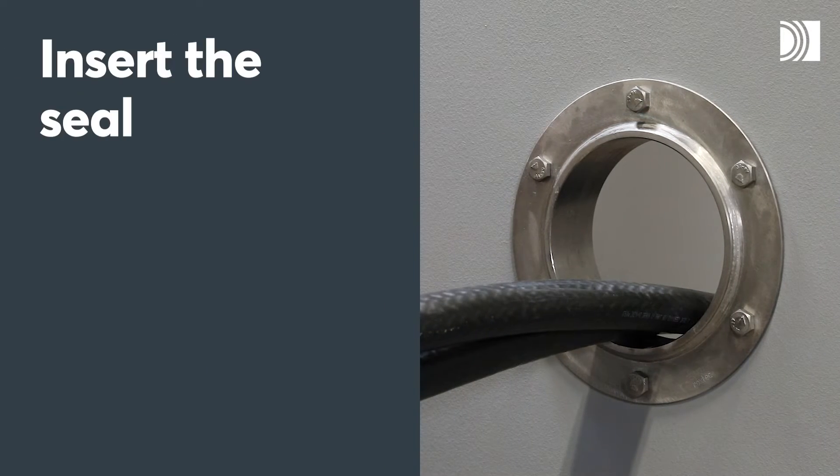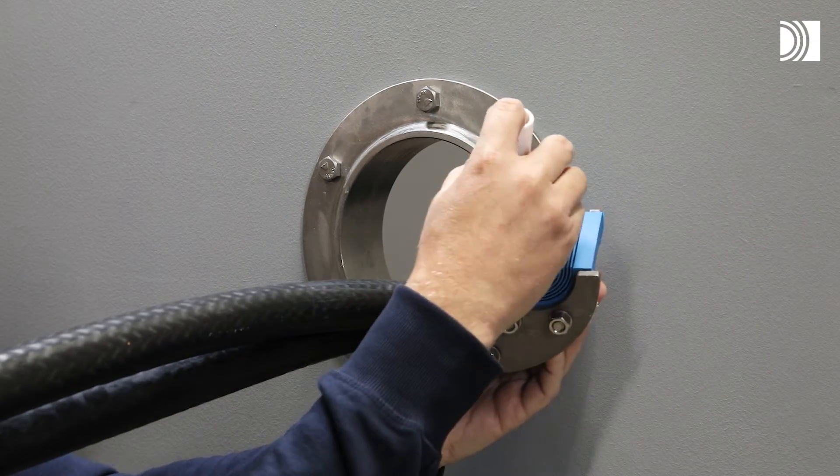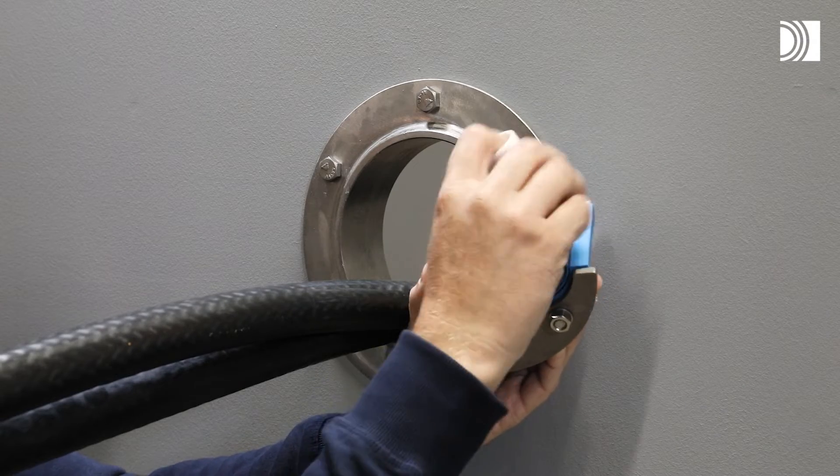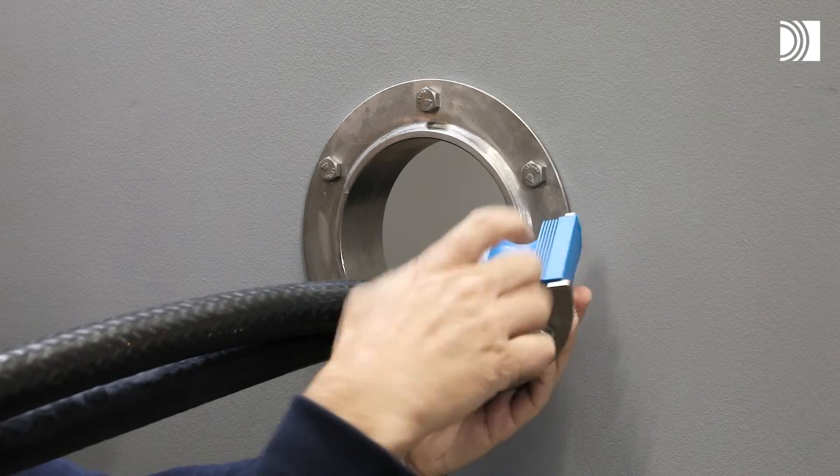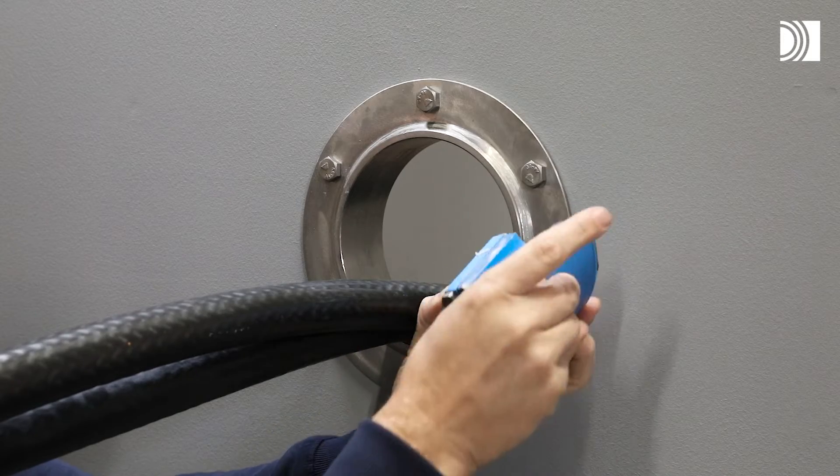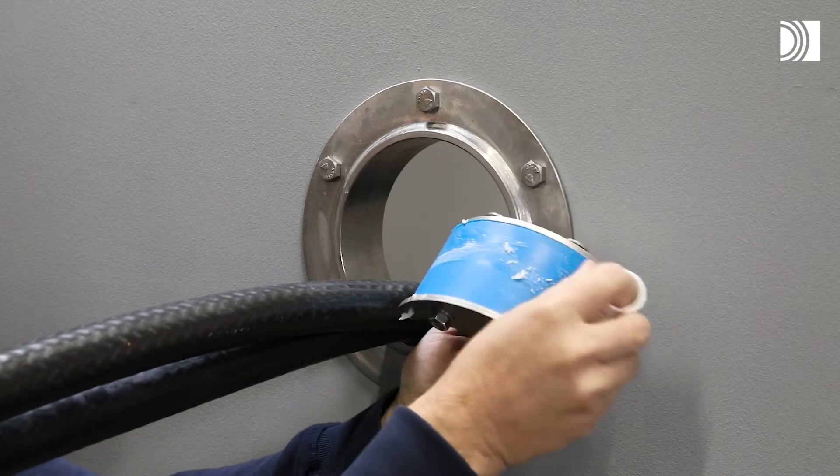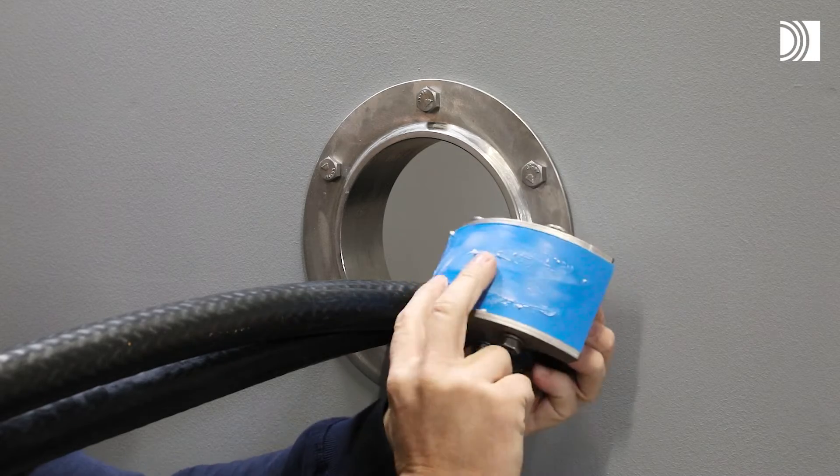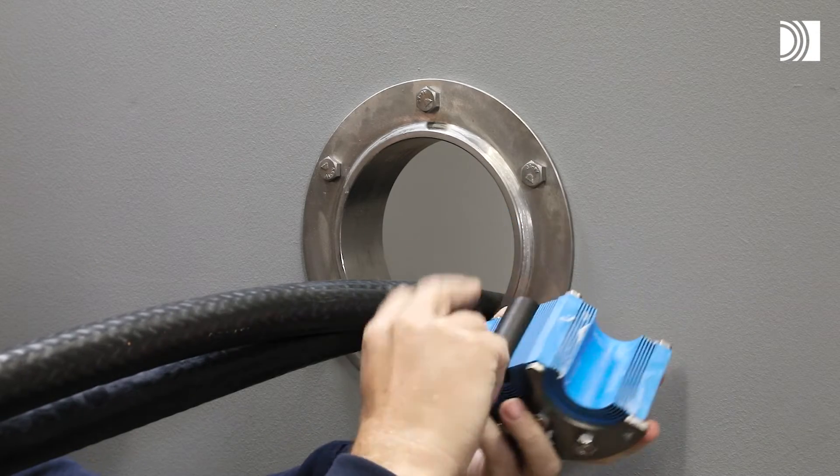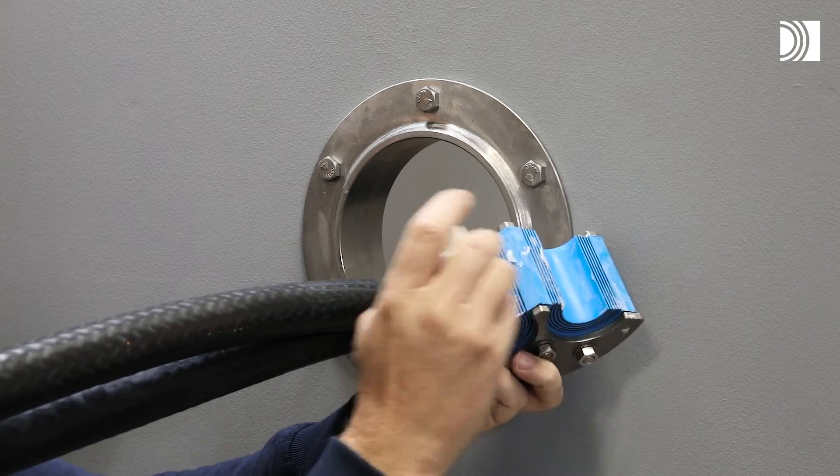Insert the seal. Lubricate the three parts of the seal thoroughly all around. Lubricate remaining cores on the sealing surface.